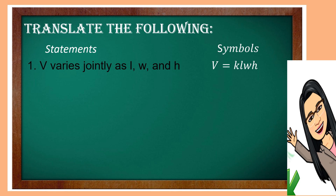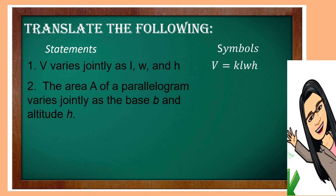Next, the area of a parallelogram varies jointly as the base and altitude. So the symbol will be A is equal to K times B times H.